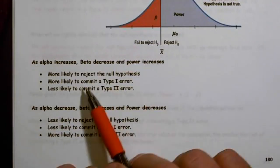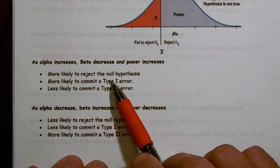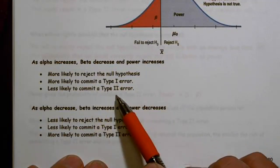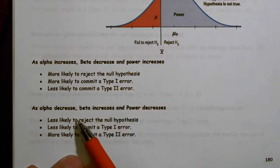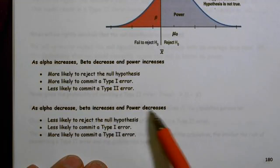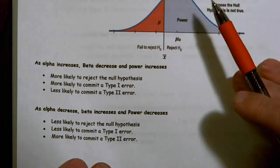So as alpha increases, beta decreases and power increases. We're more likely to reject the null, more likely to commit a type one error and less likely to commit a type two. As alpha decreases, beta increases and power decreases. Less likely to reject the null, less likely to commit a type one error, more likely to commit a type two error.